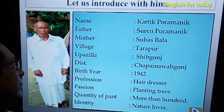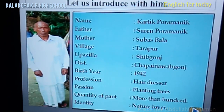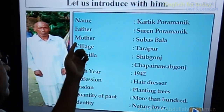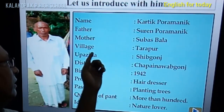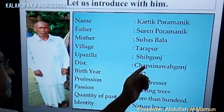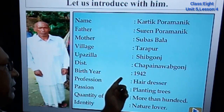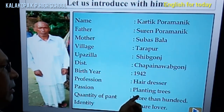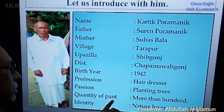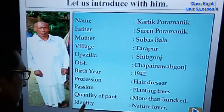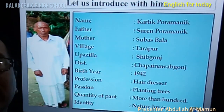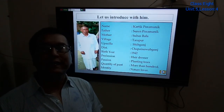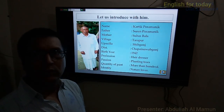This person is Kartik Puramanik. His father's name is Surad Pramani, mother's name is Subhajwala. He lives in Kanapur, Kupojala, Shipgonj, District Chapainawabganj. Birth year: 1942. Profession: hairdresser. Passion: planting trees. He has planted more than 100 trees. His true identity is that of a nature lover. So students, obviously your thinking was correct.